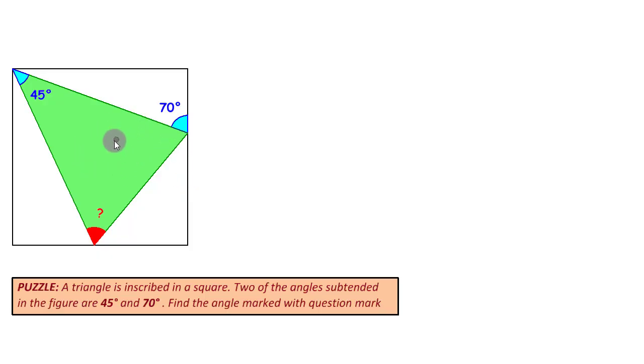In general, this triangle is a scalene triangle, so all its angles and lengths could be different. Some angles of this figure are given: this is 70 degrees and this is 45 degrees. And we are supposed to find this angle of the triangle.